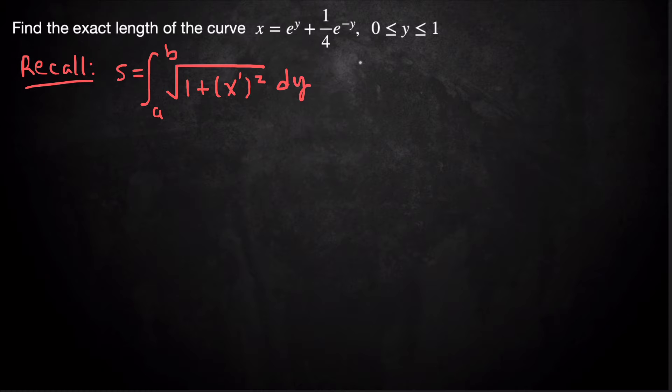So we need to first calculate x prime. So x prime, just differentiate x with respect to y, we get e^y - (1/4)e^(-y).